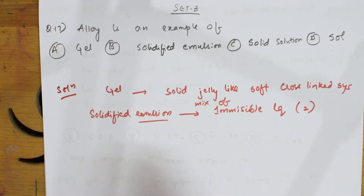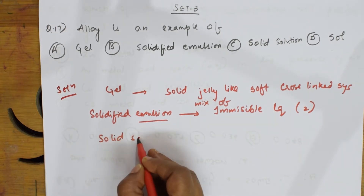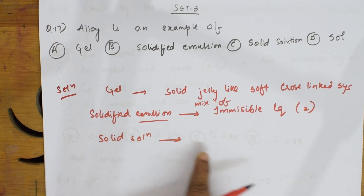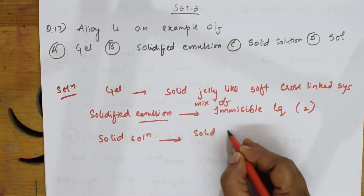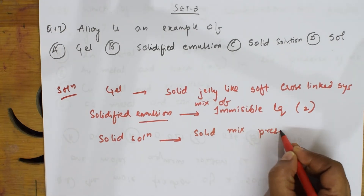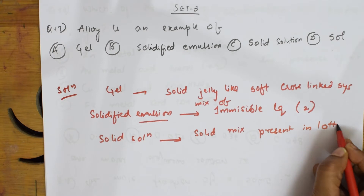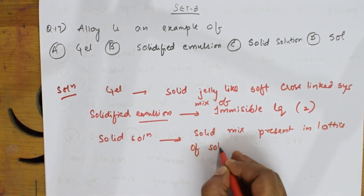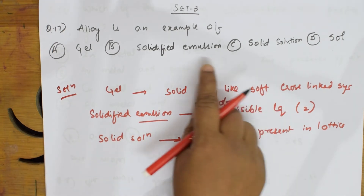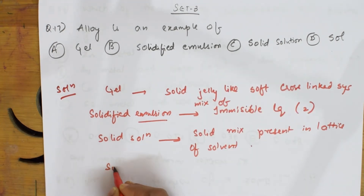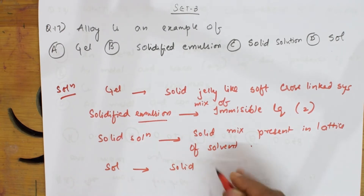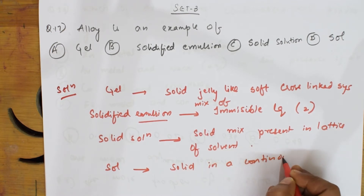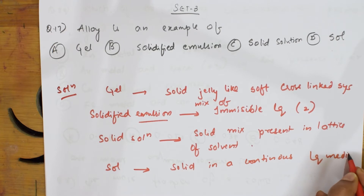What is solid solution? Basically, solid solution is nothing but a solid mixed in the lattice of a solvent — a solid mixture present in the lattice of the solvent. What is sol? Sol means solid in a continuous liquid medium — that is solid in liquid.